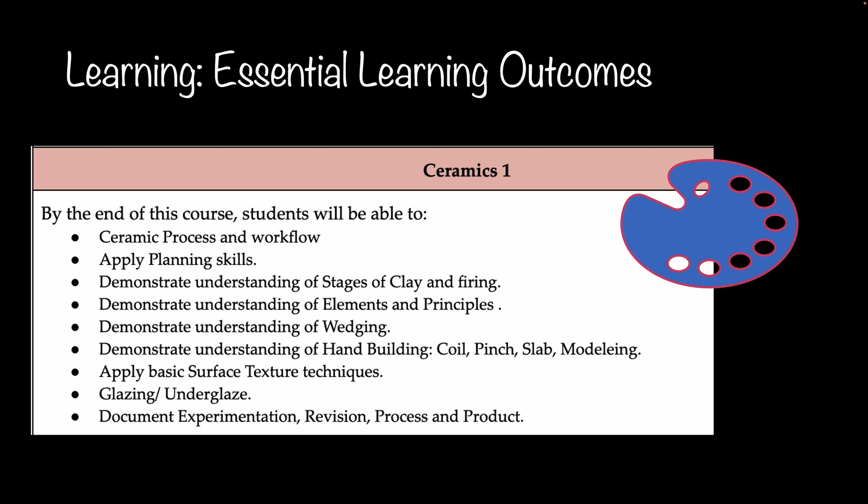The essential learning outcomes for your student this semester in Ceramic One will include applying different ceramic processes and workflow. They will work on their planning skills, demonstrate their understanding of the stages of clay and firing, and demonstrate their understanding and application of the elements and principles of art. They will demonstrate their understanding of wedging, hand building, coiling, pinch, slab, and modeling. They will learn and apply basic surface techniques, and we will explore glazing and underglaze, as well as documenting, experimenting, revising, and producing.